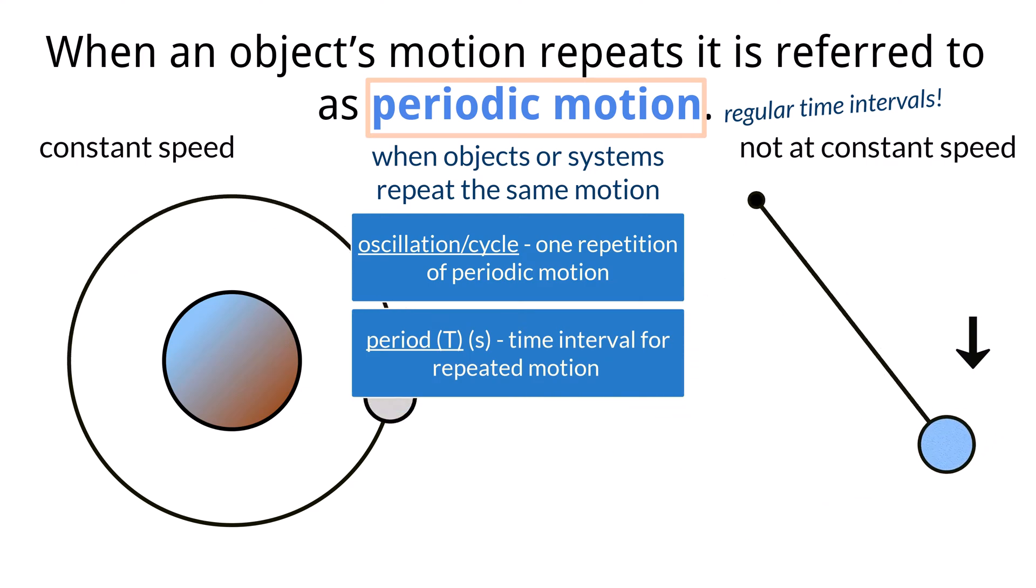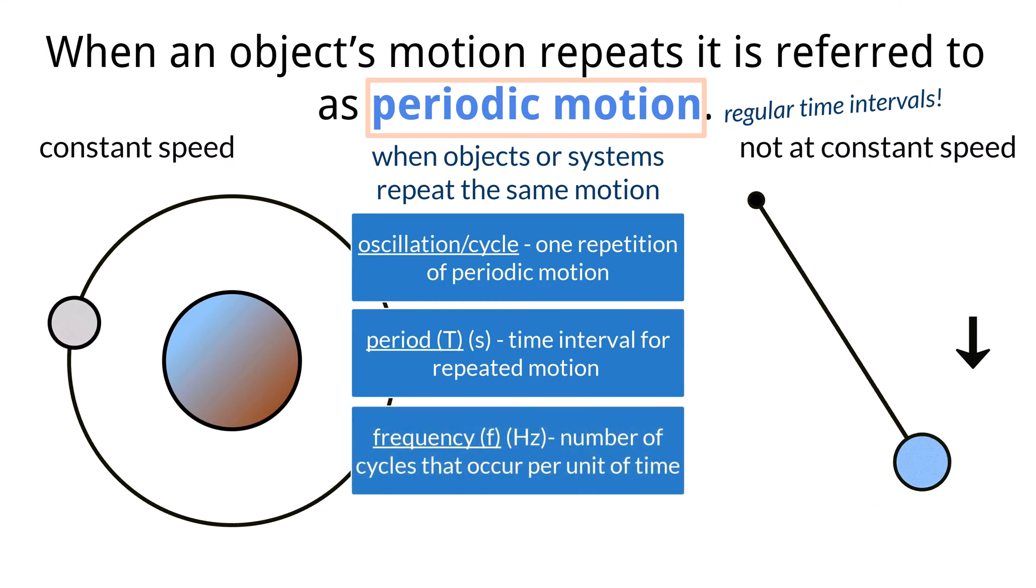The other important quantity we can gain from knowing the period is the frequency, as denoted by an F. Given that the period is a length of time, it is commonly measured in seconds, with the frequency being measured in hertz, sometimes referred to as reciprocal seconds.